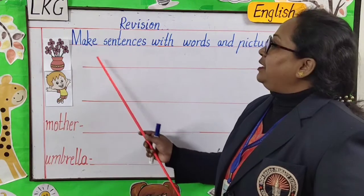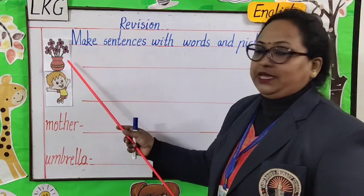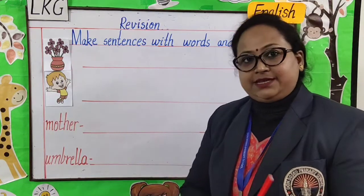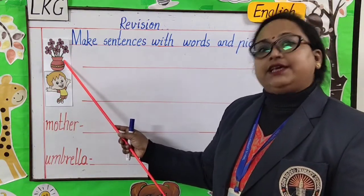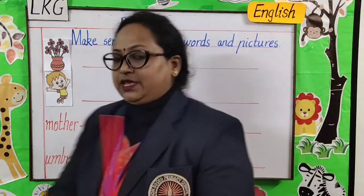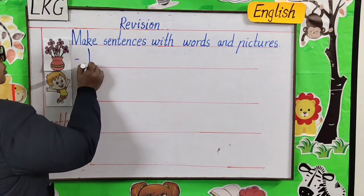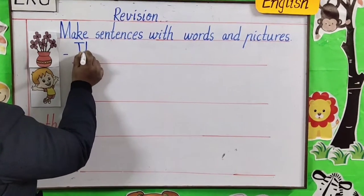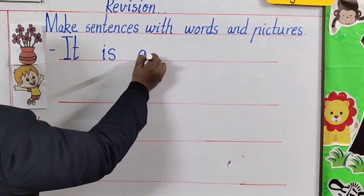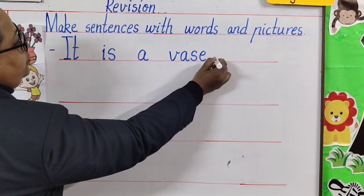Moving on children, make sentences with words and pictures. Here are two pictures. You have to observe the picture nicely and frame a sentence. It is a vase. As we know, the starting letter should be a capital letter. I-T. It is a vase. V-A-S-E. Full stop.